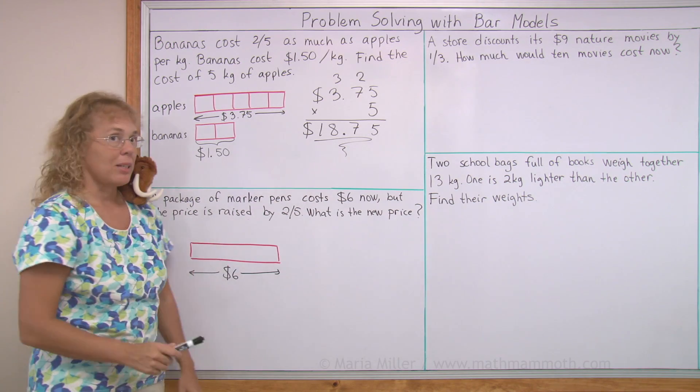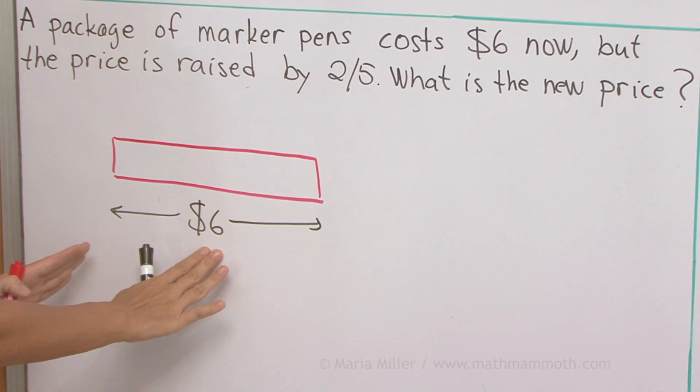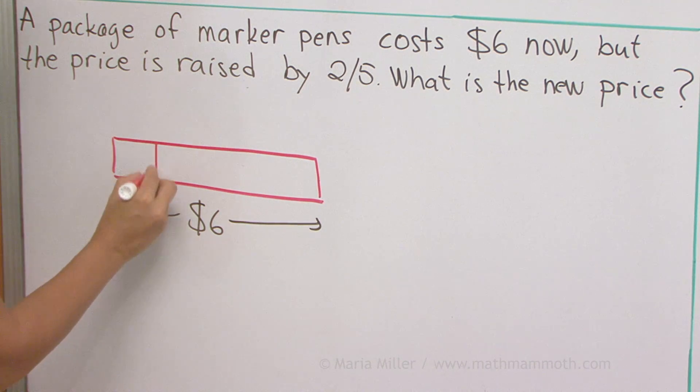But the price is going to be raised by two-fifths, two-fifths of this. So I need to divide this into five parts and look at two of those parts. Again, five parts.